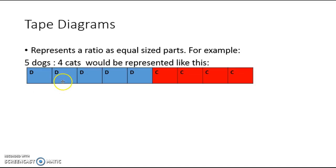A tape diagram is a representation of a ratio or a fraction as equal size parts. For instance, I'm going to represent this ratio of five dogs to four cats with this tape diagram here. The blue segments represent the dogs. You can see that they have a D in each one of them and there are five of them. And the red segments represent the cats. I need to draw nine segments in my tape diagram because five plus four is nine.